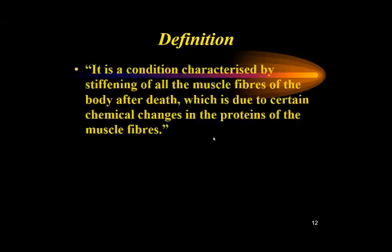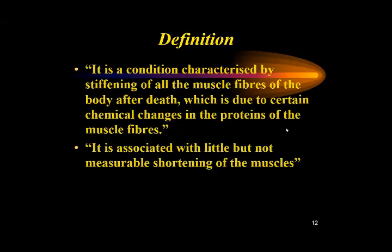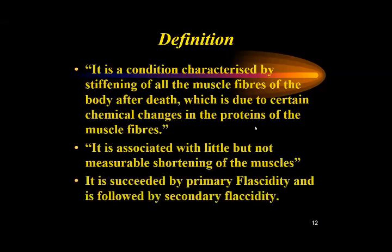The definition: rigor mortis is a condition characterized by stiffening of all the muscle fibers of the body after death, due to certain chemical changes in the proteins of the muscle fiber. It is associated with little but not measurable shortening of the muscles. It is succeeded by primary flaccidity and is followed by secondary flaccidity.